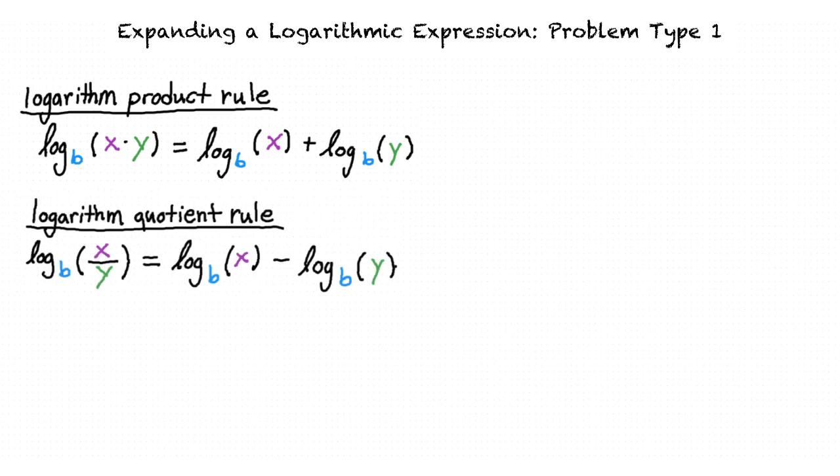The logarithm quotient rule says that the base b logarithm of x divided by y is equal to the base b logarithm of x minus the base b logarithm of y.